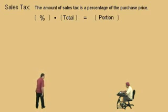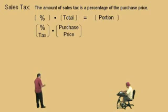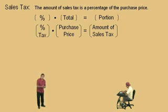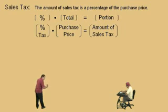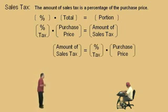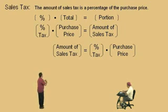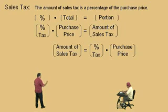The percent of a total is a portion. In this problem, percent is going to be percent tax times the total, which is your purchase price, and our portion is the amount of sales tax. So remember, this amount of sales tax is a portion of the purchase price. Some people tend to remember it this way: the amount of sales tax is simply the percent tax times the purchase price. So if you know the tax rate, you just take the percent tax and multiply it by the purchase price — the price on the price tag — and that will give you the amount of sales tax. The amount of sales tax is calculated by taking the percent tax times the purchase price.